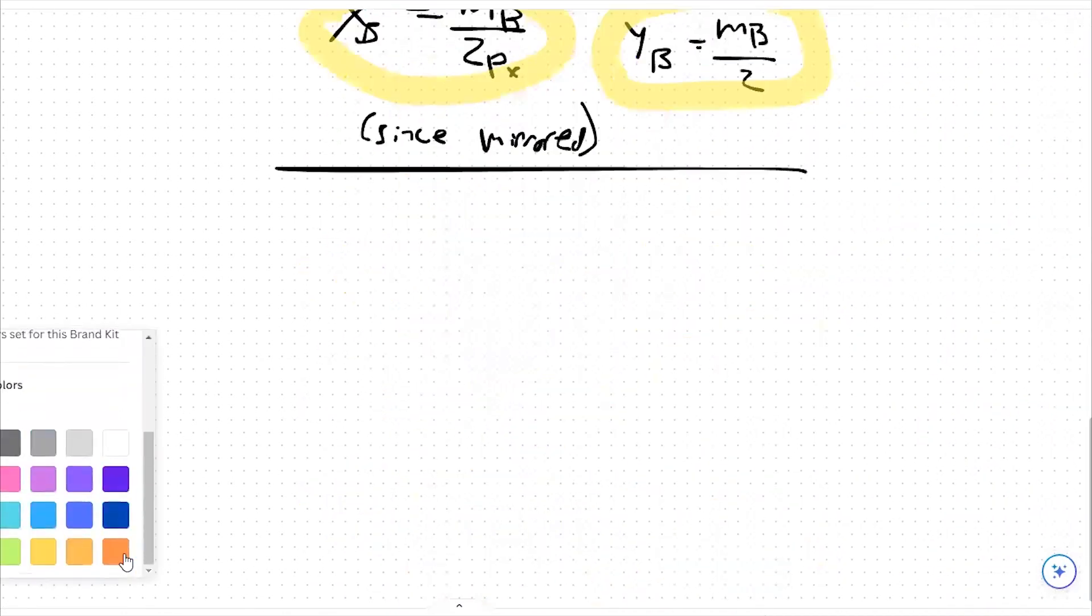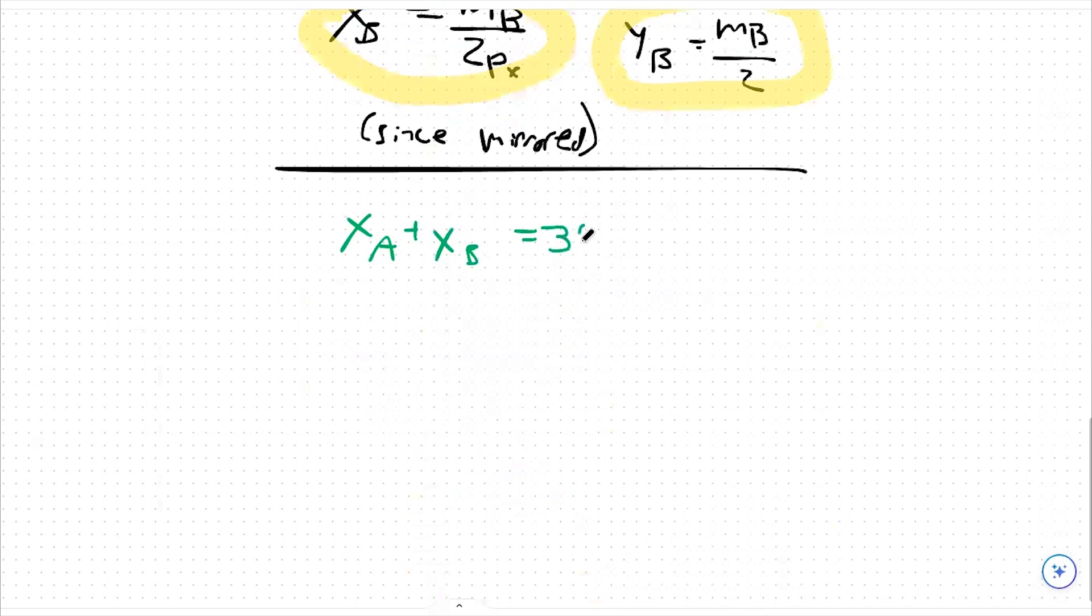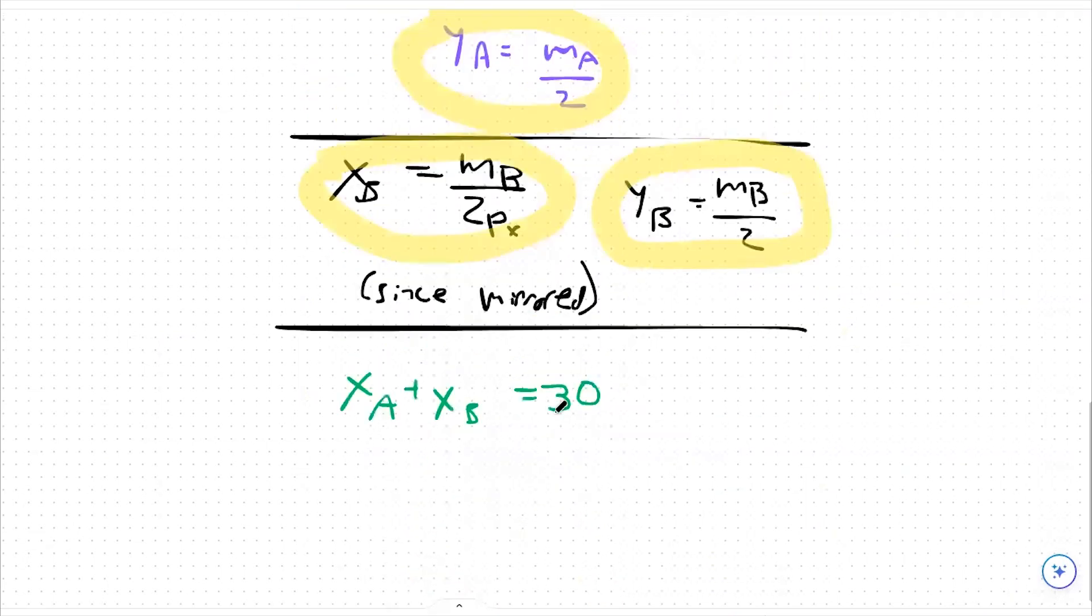I'm going to say again, xA plus xB equals 30. So we know that our endowment is such that there's only 30 units of good x total in this market.